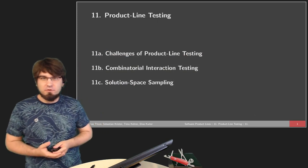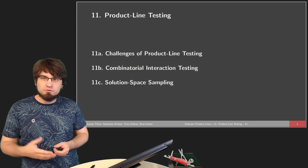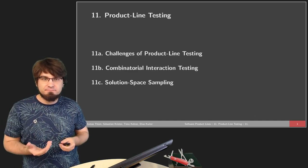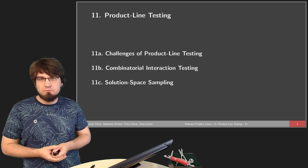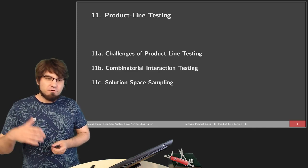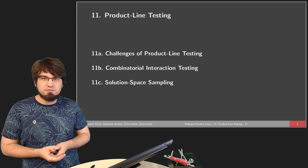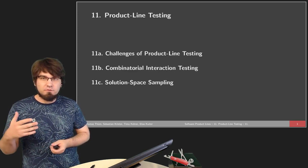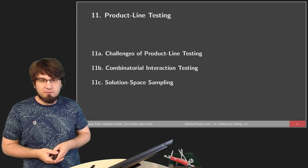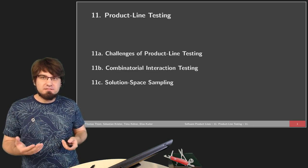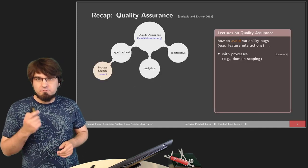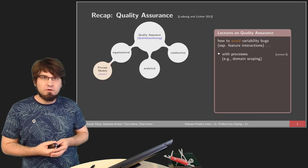The three parts we're covering are: first, the challenges when testing a product line, including a short recap on testing in general and how it applies to product lines with large configuration spaces. Then we'll look at specific techniques — combinatorial interaction testing, which is a black box approach, and solution space sampling, which is a white box approach that also looks at implementation artifacts.